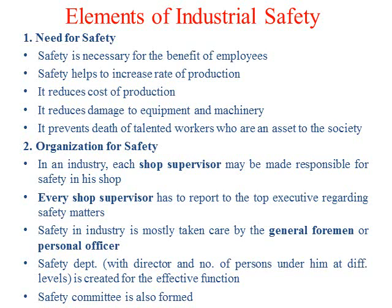What are the elements of industrial safety? There are many elements. The first element is the need for safety. We have to ensure that every employee knows and understands the need for safety. Safety is necessary for the benefit of the employee. We need to educate employees that these rules are implemented for their benefit. Also, the management should understand that through proper safety practices, we can increase the rate of production, reduce the cost of production, and reduce damage. Everyone, including top management, middle-level, and lower-level persons, should understand the need for safety.